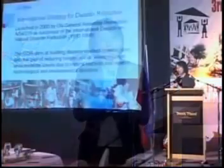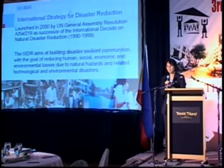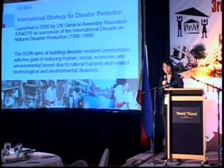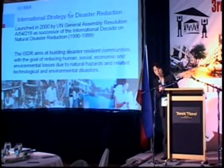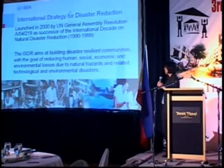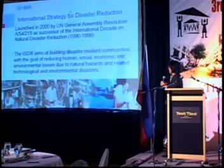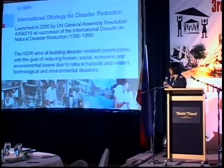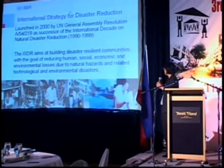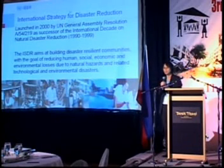We are now focusing more on risk reduction. In order to coordinate the international effort of disaster risk reduction, in the year 2000 the General Assembly approved the International Strategy of Disaster Reduction. At the same time, they established the ISDR Secretariat. The strategy basically aims to build disaster-resilient communities with the goal of reducing human, social, economic, and environmental losses to natural hazards and related technological and environmental disasters.